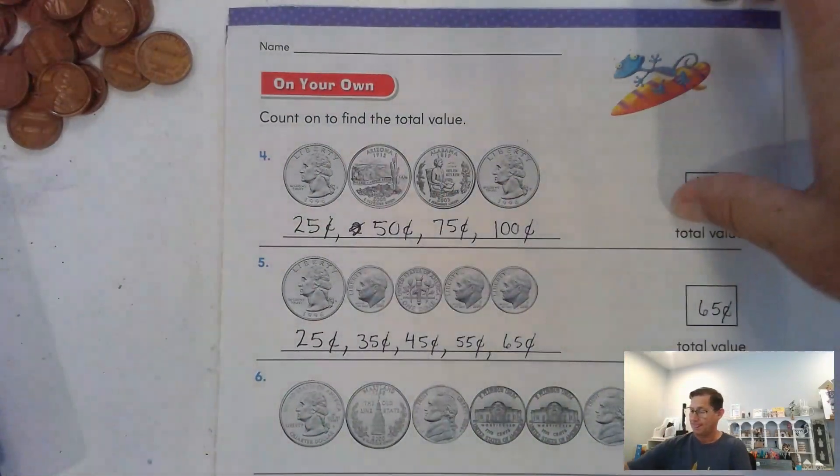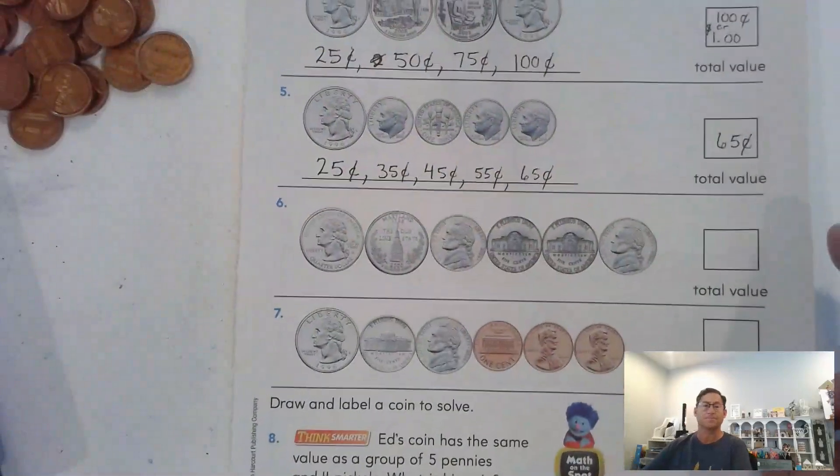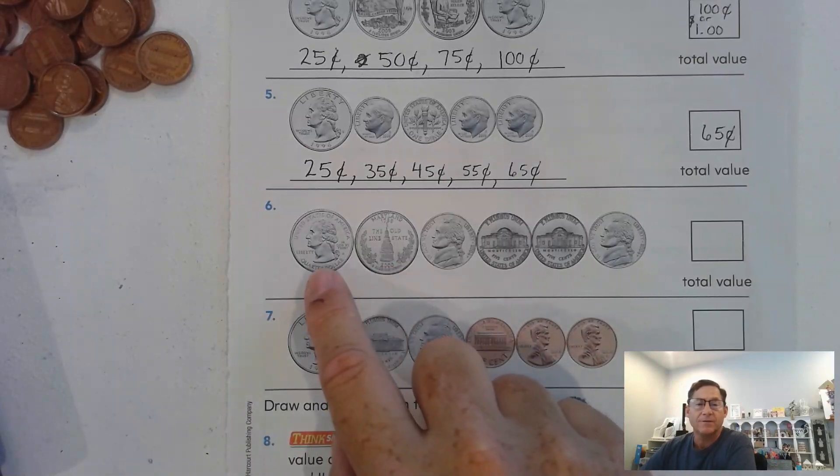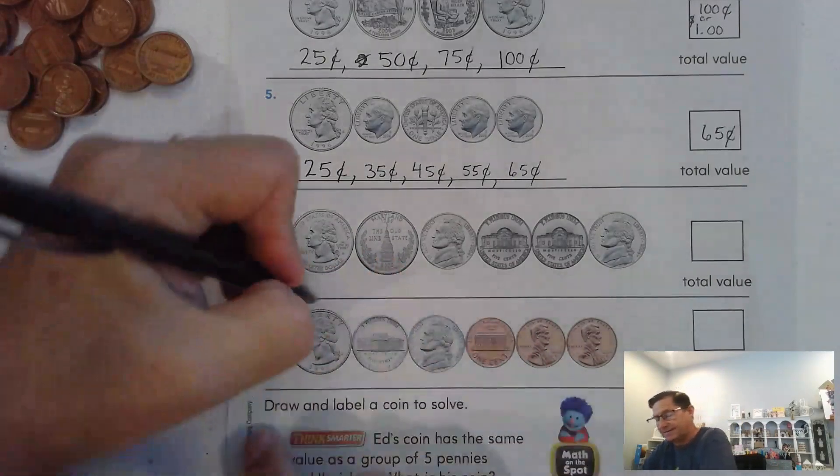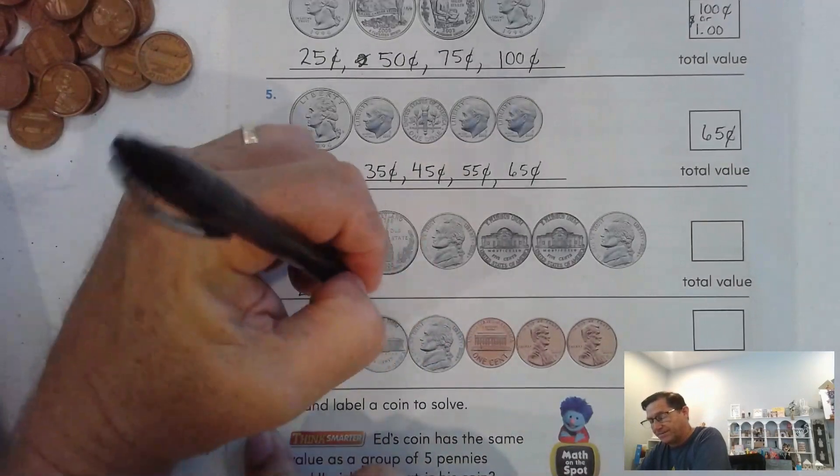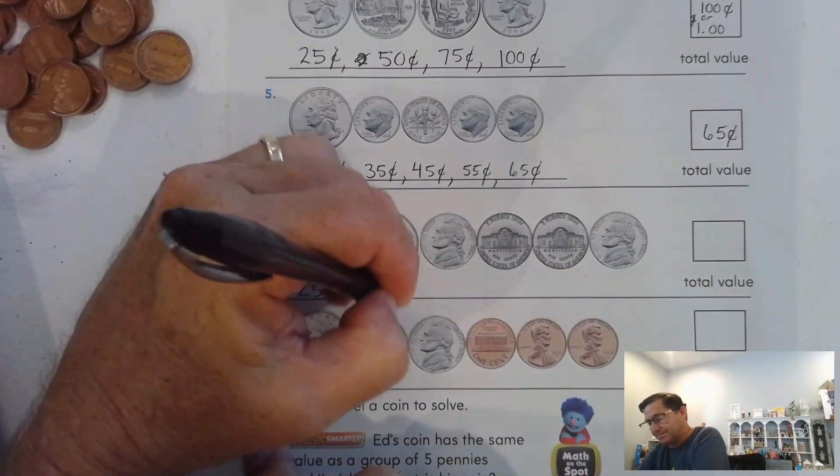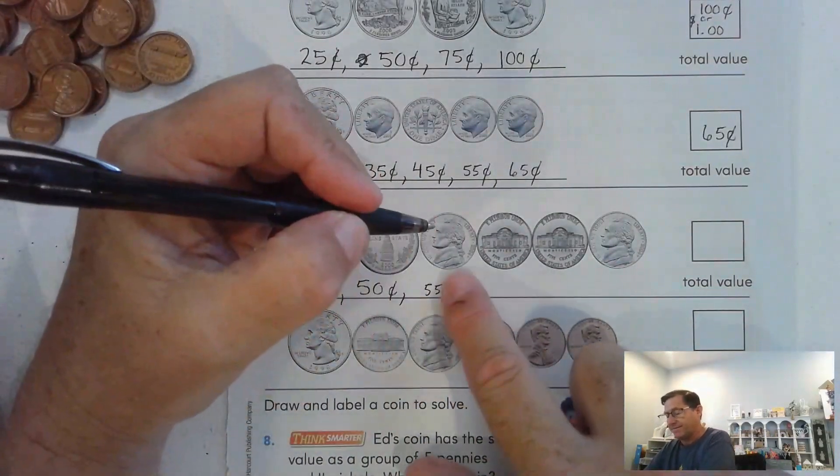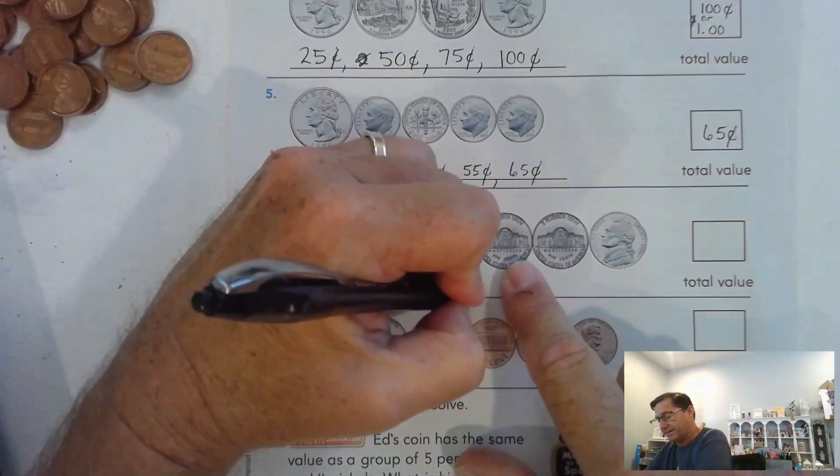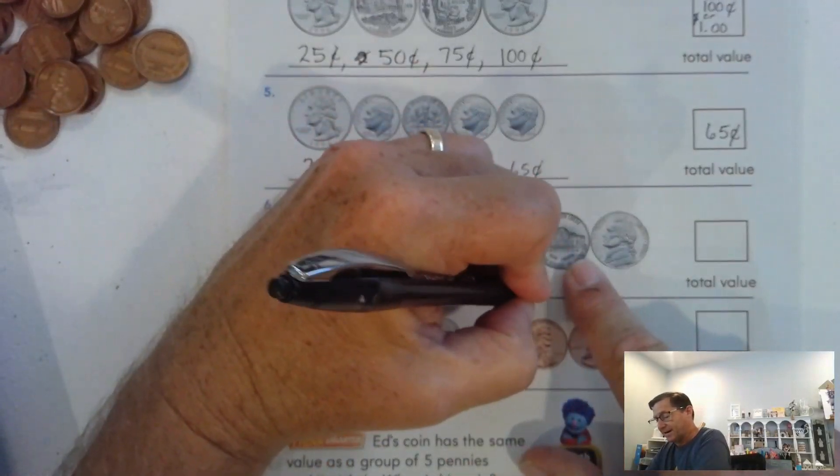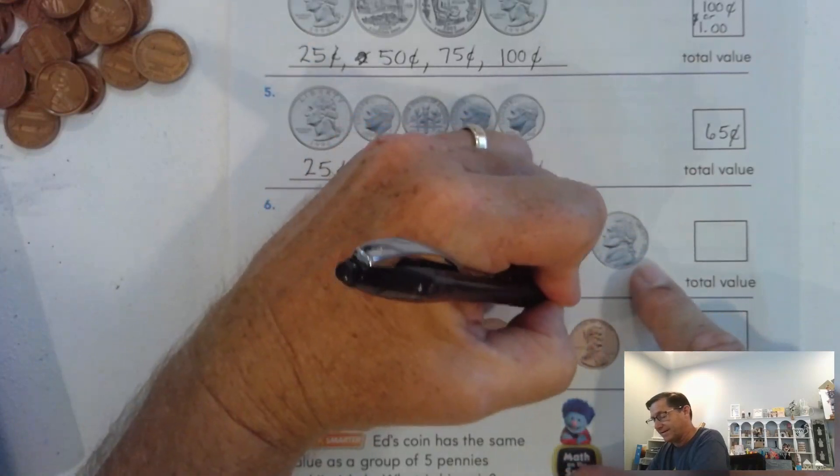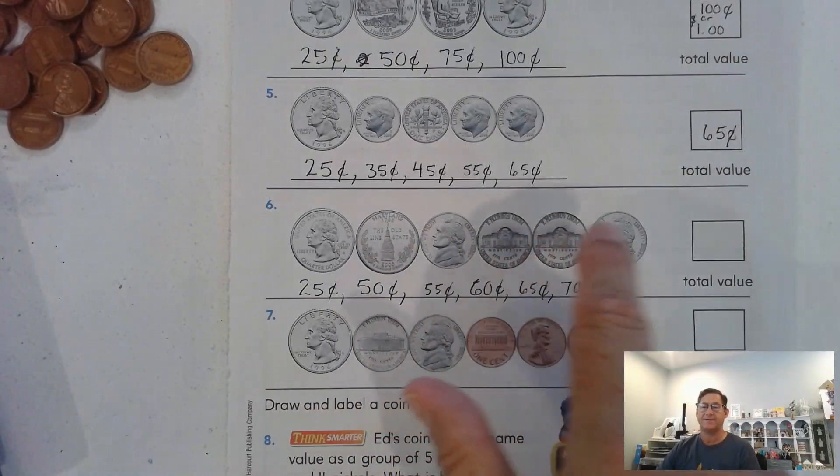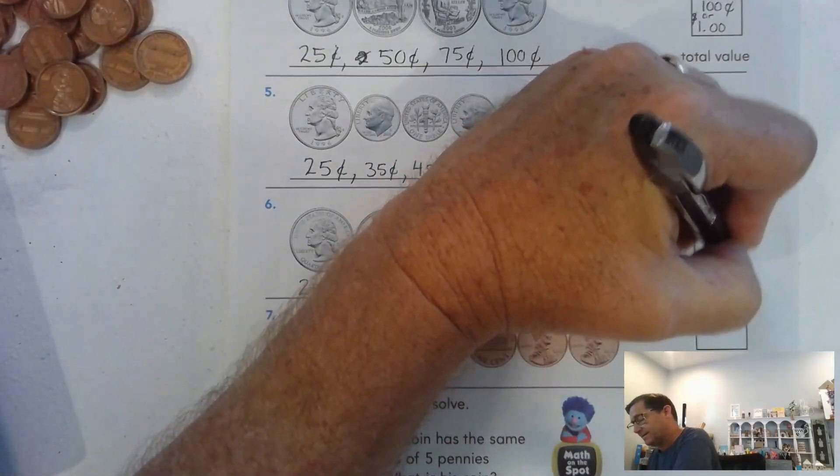This is the back of the Maryland quarter. We have 25, 50. Two quarters again, 50 cents. Then we're going to count on by five: 50, 55, 60, 65, 70. So 70 cents.